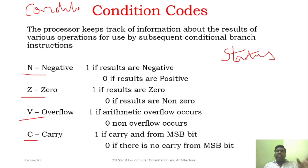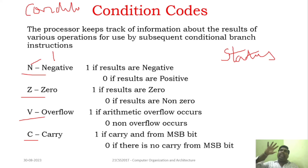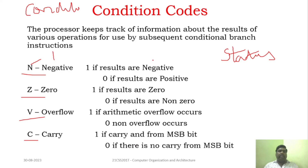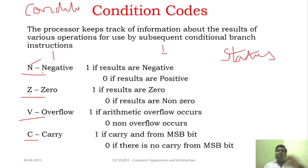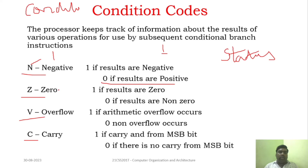If this flag is set — that is, whenever you process some information and if the result is negative, it will set the N flag to 1. If not, it will be set to 0. And if the result is zero, the zero flag will be set to 1. If it is not zero, it will be cleared to 0. While performing arithmetic operations, the negative sign means the MSB is 1 in binary representation.